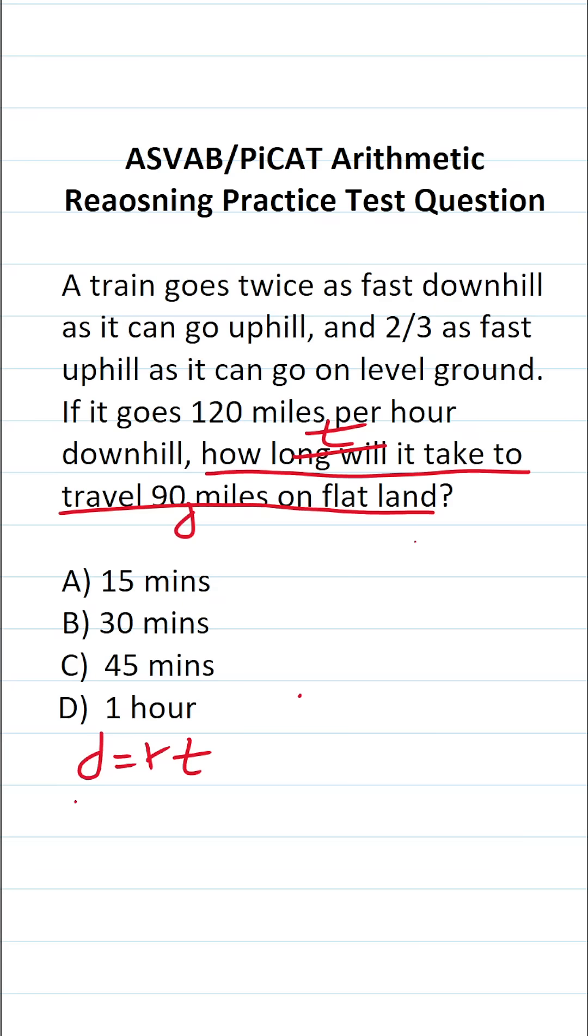All right, so we know distance is going to be 90. That said, this one's tricky because it's asking us to solve for T, but it doesn't explicitly give us the rate of the train as it goes across flat land. So that's the first thing we have to figure out.